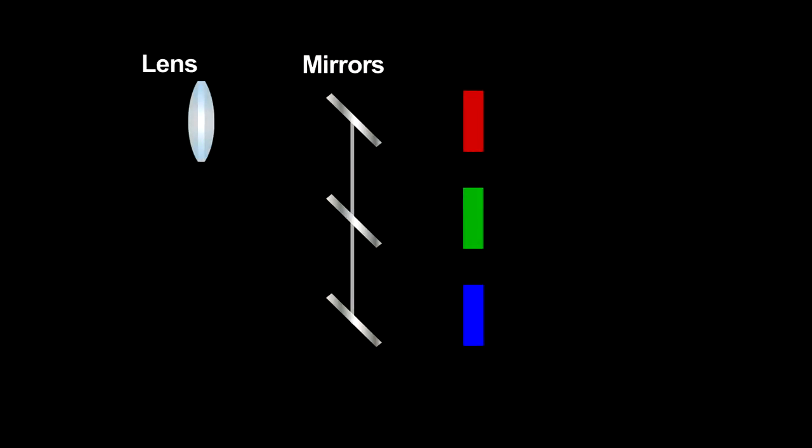Now, one last important question. How do we get color? A CCD only detects total light intensity, which is useful for producing a black and white image. But for a color photograph, we need to separate the entering light into red, green and blue.